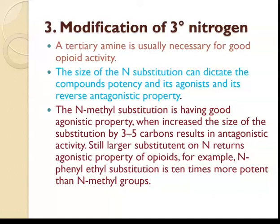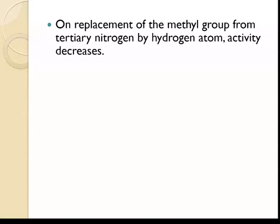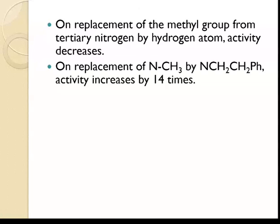N-phenylethyl substitution is 10 times more potent than the N-ethyl group. In short: N-methyl substitution gives good agonistic activity; increasing the carbon chain to 3–5 carbons gives antagonistic activity. N-allyl and N-cyclopropylmethyl groups lead to narcotic antagonist properties. Replacement of the methyl group from tertiary nitrogen by hydrogen decreases activity. Replacement of N-CH3 by N-CH2CH2-phenyl increases activity by 14 times.